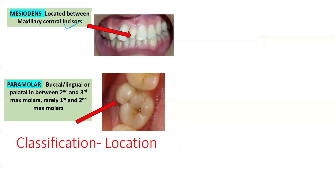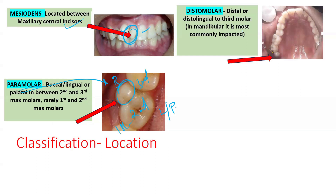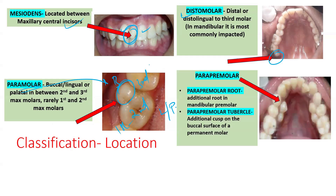Based on location: mesiodense is located between the two central incisors. Paramolar is present buccally, lingually, or palatally to the molars — usually between the second and third molar, sometimes between the first and second. Distomolar is present behind the third molar. Parapremolar is located buccal or lingual to the premolars. Additional categories include the paramolar root and paramolar tubercle — an additional root and cusp in relation to the molar.